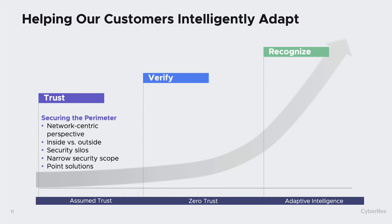If you can build a strong enough, high enough wall, then people on the outside are the bad guys and people on the inside are the good guys. This has proven to be obviously false over the years. One of the last nails in the coffin was the SolarWinds breach for the United States federal government. You can extend this argument to basically anything that looks at security in the concept of a security silo — because that's essentially what this is.